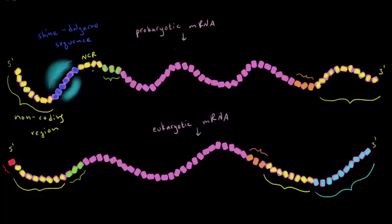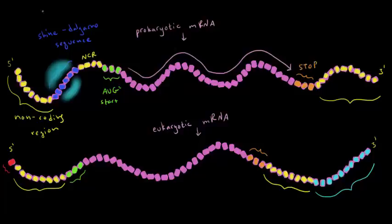And then we have our start codon, which is typically AUG. So that tells us to start. And so the ribosome is going to start translating. It's going to read this entire section, put together the corresponding polypeptide chain, until it hits the stop codon, which tells it to stop translating. And then we have another non-coding region.